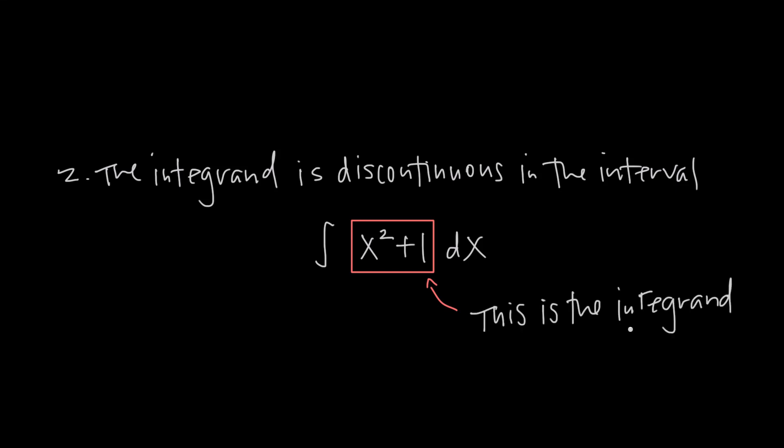Well, the integrand is just the function that we're integrating. It's the value we always find between the integral symbol and the dx that we put at the end. This is the function we're trying to integrate, and if it has any kind of discontinuity inside the interval, then the integral in general is considered to be improper. Even if neither of the limits of integration are infinite, the integral is still improper because of the discontinuity in the function.